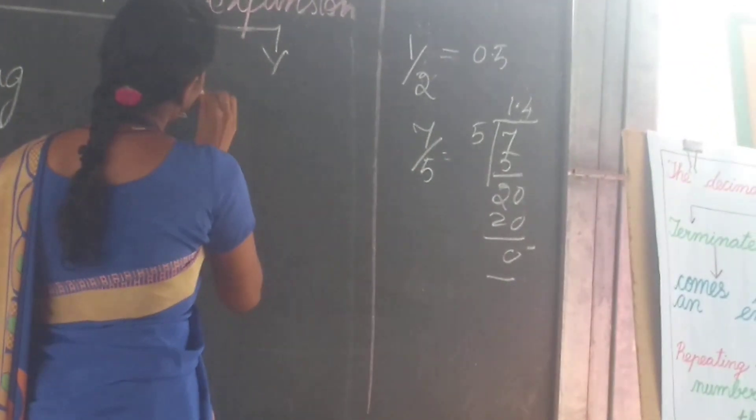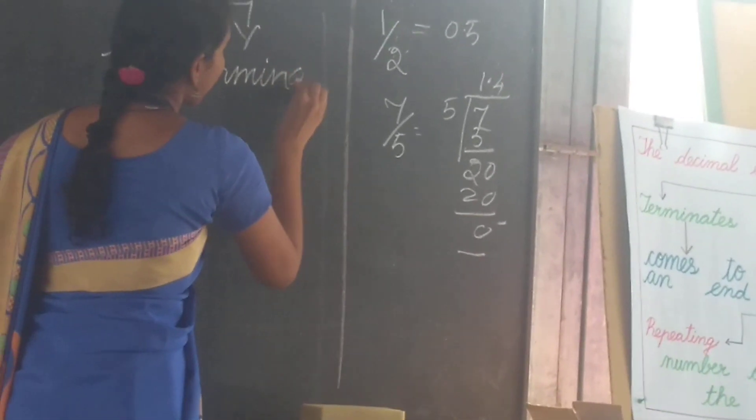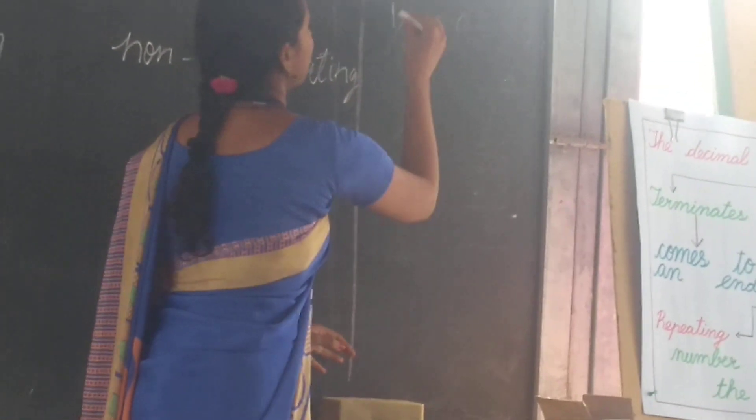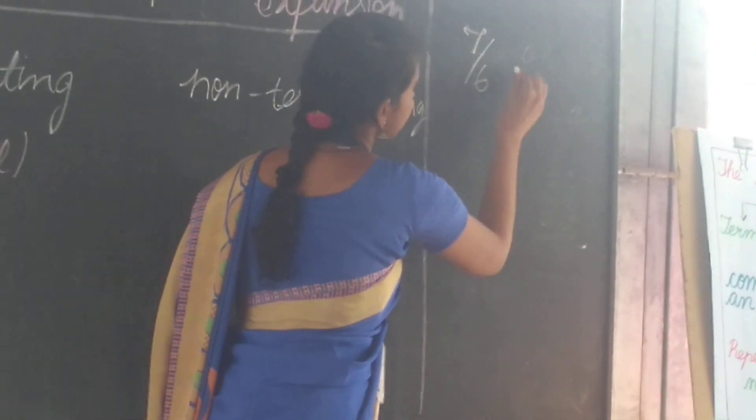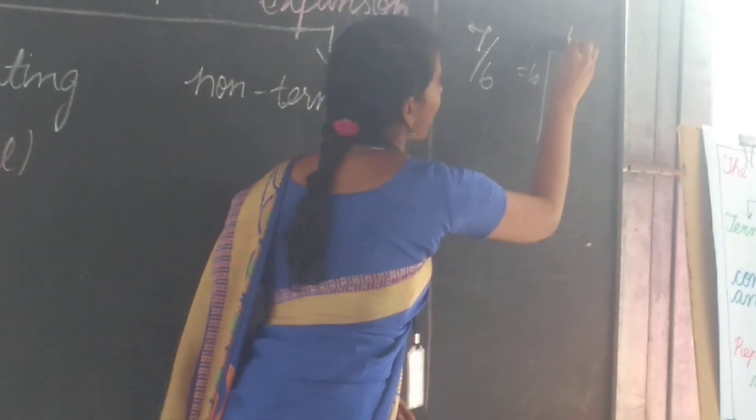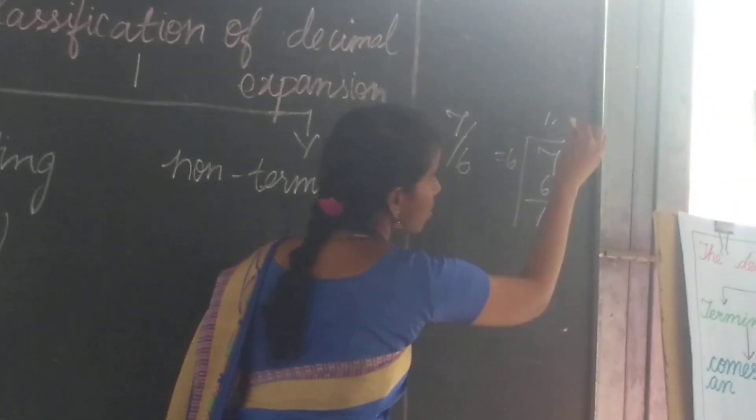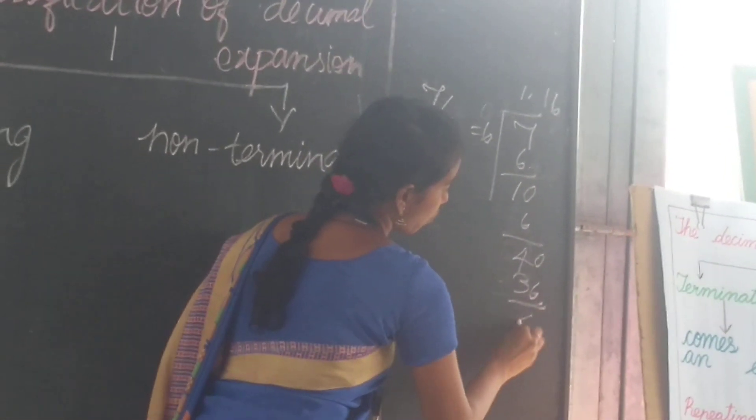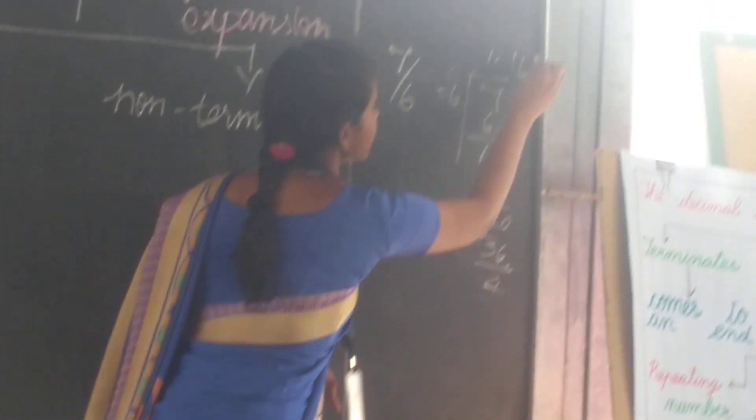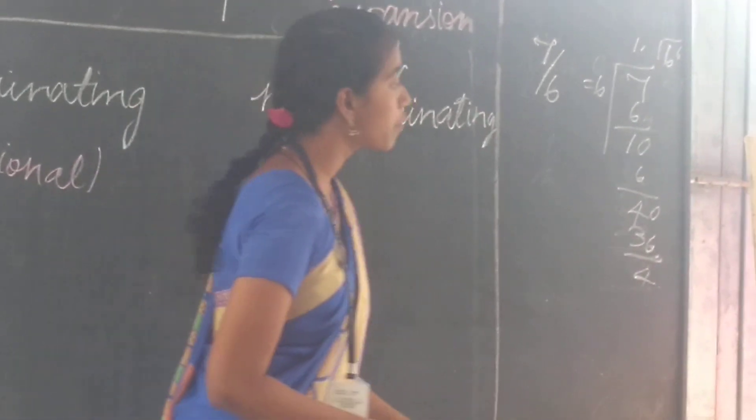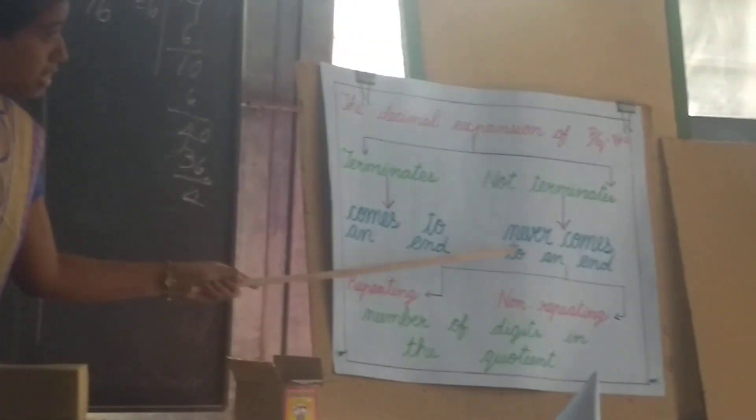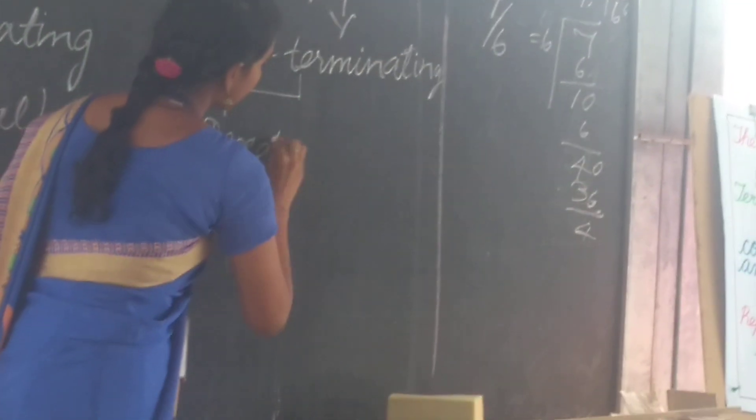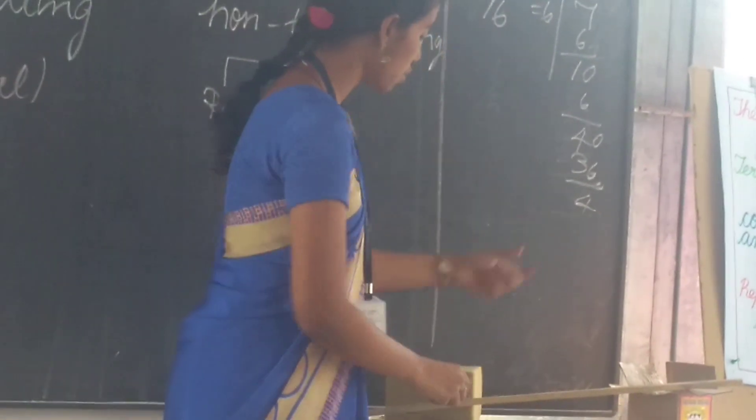We see the next one: non-terminating. For non-terminating examples, 7 by 6. See, we divide this number. 1.666, remainder 1, 1.0, 1.666, remainder 4. It goes on repeating. 1.1666. If the number, if the remainder never comes to an end, see, non-repeating. So if the number never comes to an end, then it is known as...